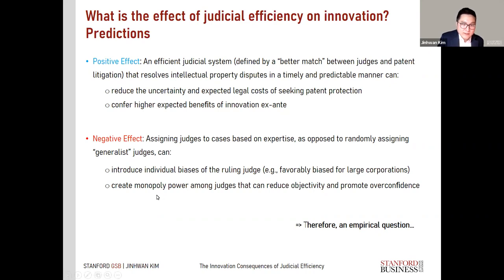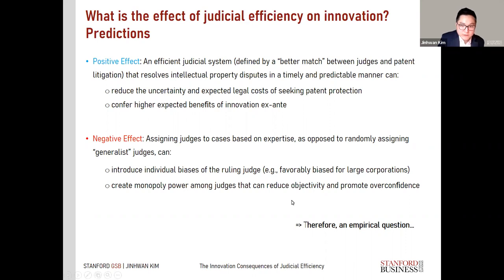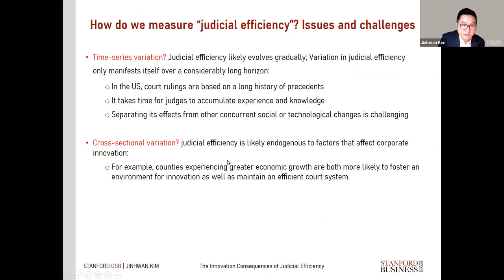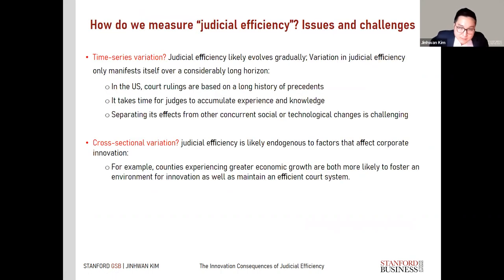But a more efficient system might also have a negative effect. This is precisely the harshest critique of non-random assignment: it can promote individual biases. In the better-match system that explicitly assigns expert judges to certain cases in a non-random way, it might exacerbate certain judge biases. For example, certain judges might have very favorable views on how large corporations can patent their innovations, which might discourage and crowd out smaller inventors. It might also create overconfidence and reduce quality of decisions if confined to a smaller number of judges. We view this as ultimately an empirical question.